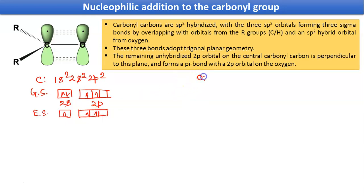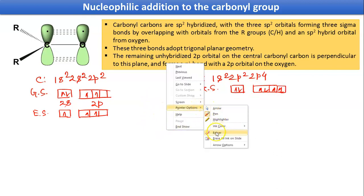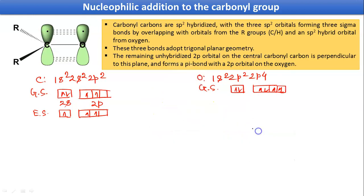In the case of oxygen, it is 1s2, 2s2, 2p4. So in this case, in the ground state, there will be no such electron transfer. Directly we can do the hybridization. So sp2 hybridization will be taking place.